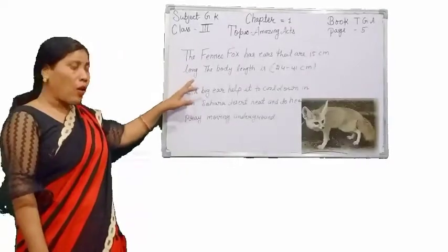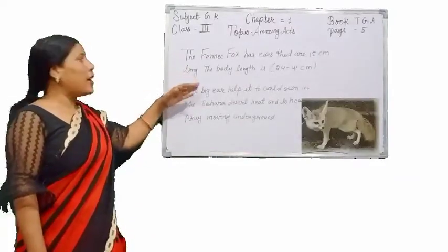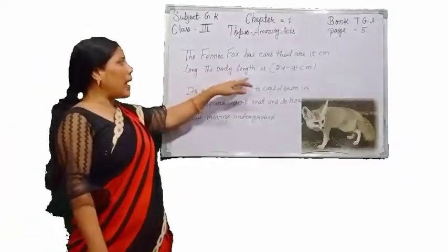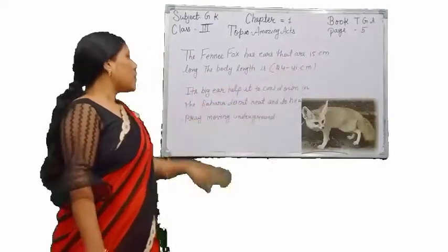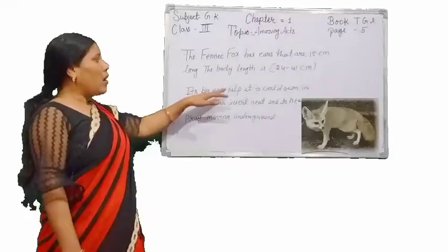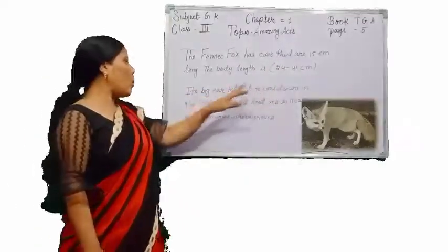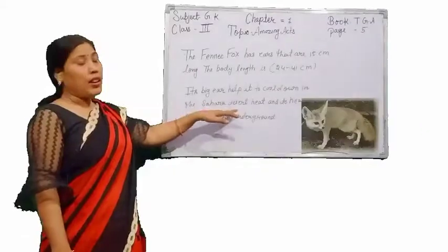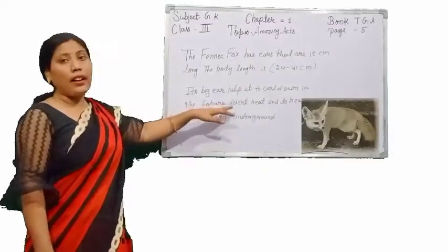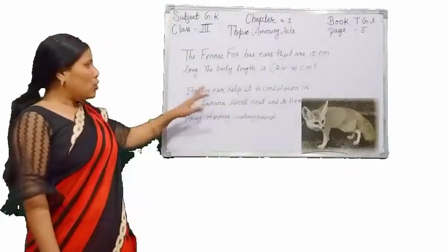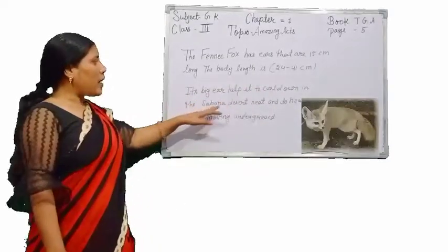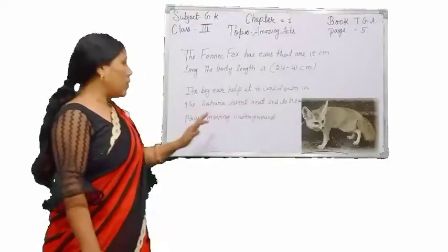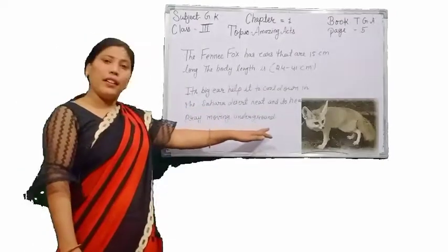Its body is small, but its ears are very big. The body length is 24 to 41 centimeters. Its big ears help it to cool down in the Sahara Desert where the temperature is very high, and to hear prey moving underground.